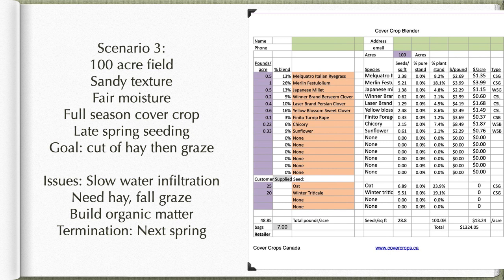In scenario number three, we take the same 100-acre field, but now we've gone to a sandy texture with fair moisture. Still a full-season cover crop seeded late spring, still wanting hay and grazing. Same goals of slow water infiltration, hay, fall graze, organic matter, terminating next spring — very much like scenario two. But in this case we're going to tweak our seed density, because when dealing with drier soils we're not going to be able to support the same number of seeds per square foot. That reduces our cost and our risk. We might even tweak it further — maybe instead of Italian ryegrass, put some teff grass in. We have lots of options.